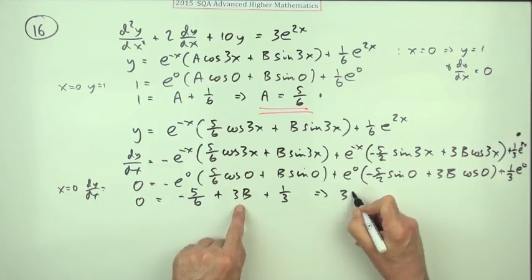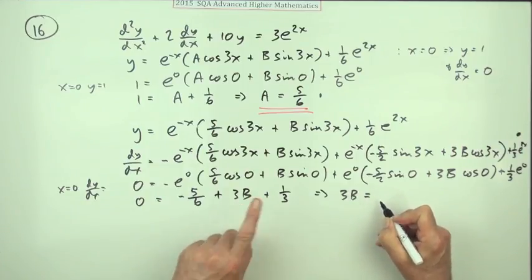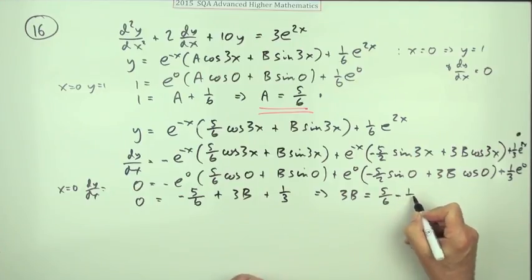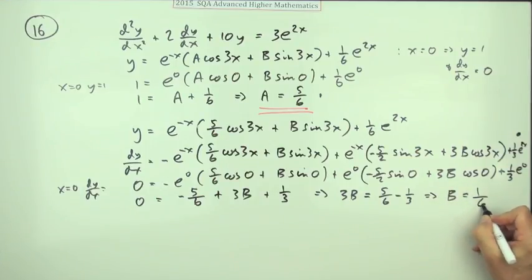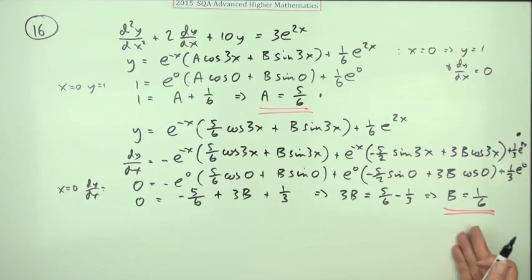So if I just rearrange that, 3b would equal 5/6 minus 1/3, which is a half, divided by 3 means that b equals 1/6. Not quite the final mark here, the final mark's just for popping it back into here to finish it off.